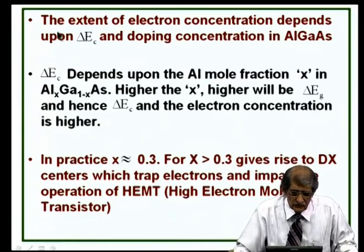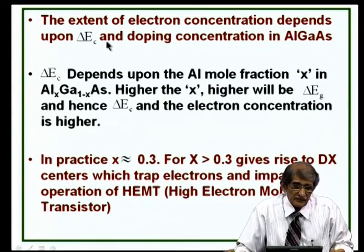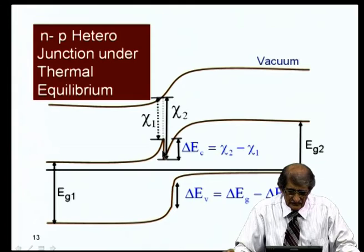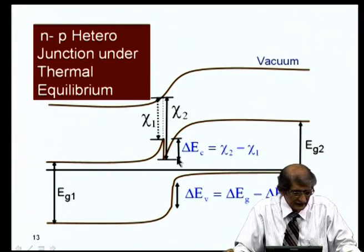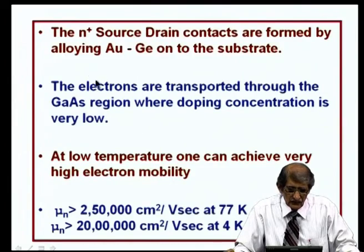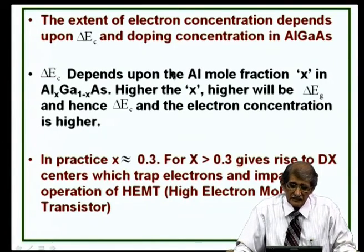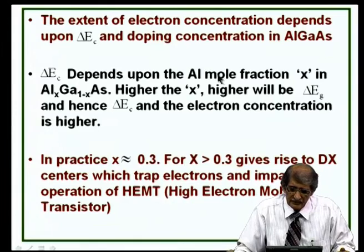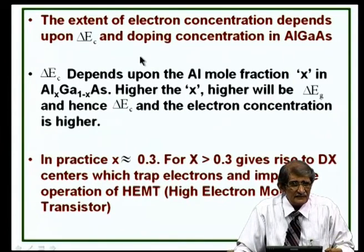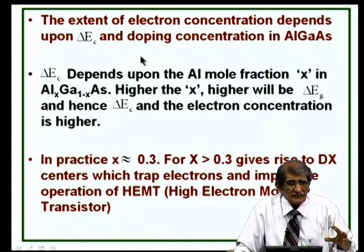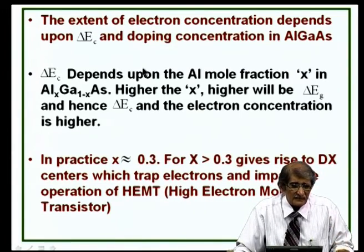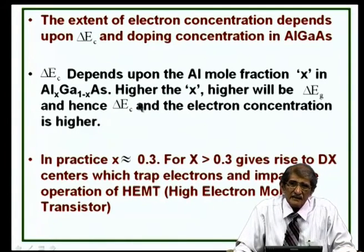The extent of electron concentration in the notch depends on ΔEc: a higher notch leads to more band bending and more electrons, giving more current for a given voltage. ΔEc depends on the mole fraction x of aluminum, since ΔEc depends on ΔEg, which depends on how much higher the AlGaAs band gap is compared to GaAs. Higher aluminum concentration means higher band gap, larger ΔEg, and larger ΔEc.